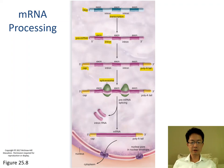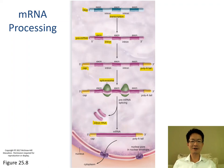The mature mRNA will then leave the nucleus through the nuclear pore to go into the cytoplasm. The introns of the RNA will be recycled. They use the recycled introns to stop protein synthesis — to stop translation.